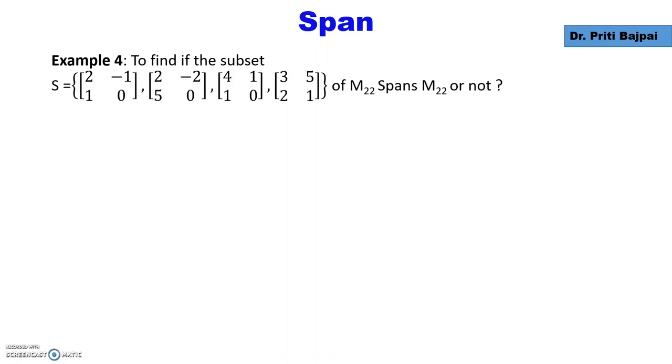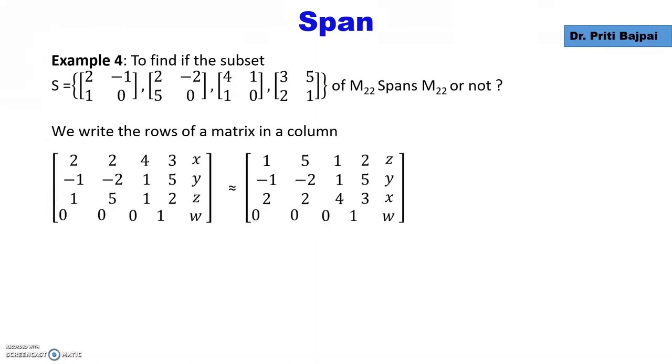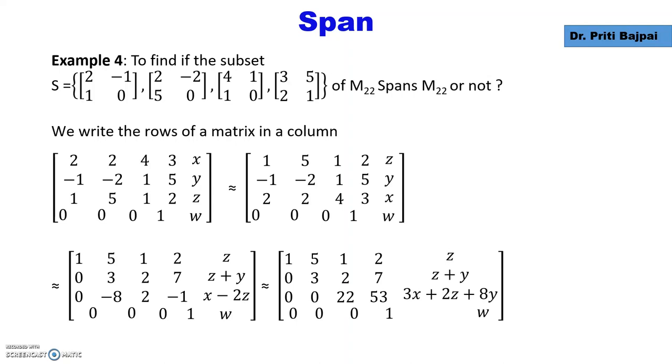Let's take one example on matrices. To find if the subset S of these four matrices of M₂₂ spans M₂₂, we form the matrix by taking one matrix at a time, taking the row and forming a column from that. We form our augmented matrix and do Gauss elimination. After solving, we find this system is solvable, and hence we say that the subset S spans M₂₂. Thank you for watching.